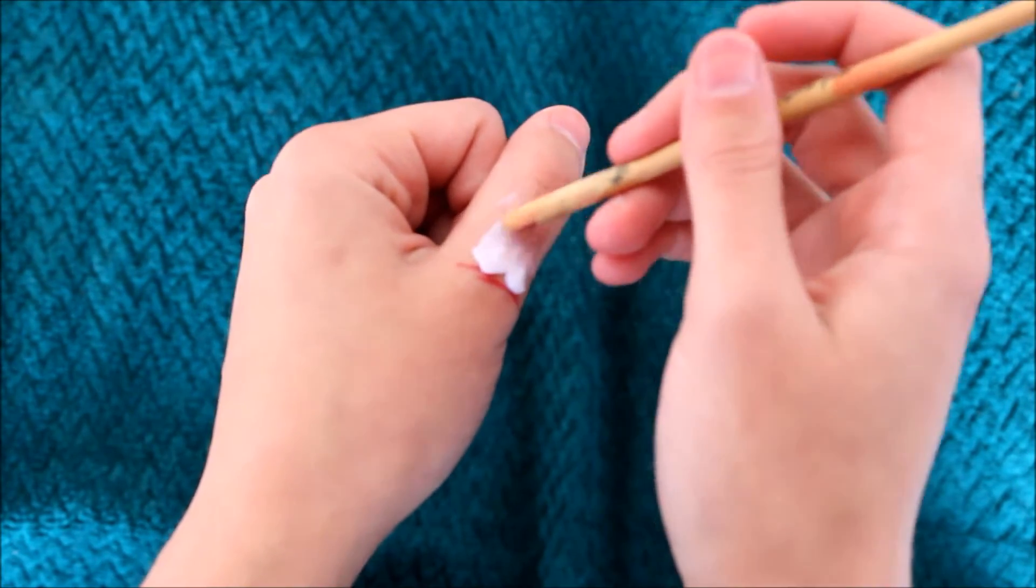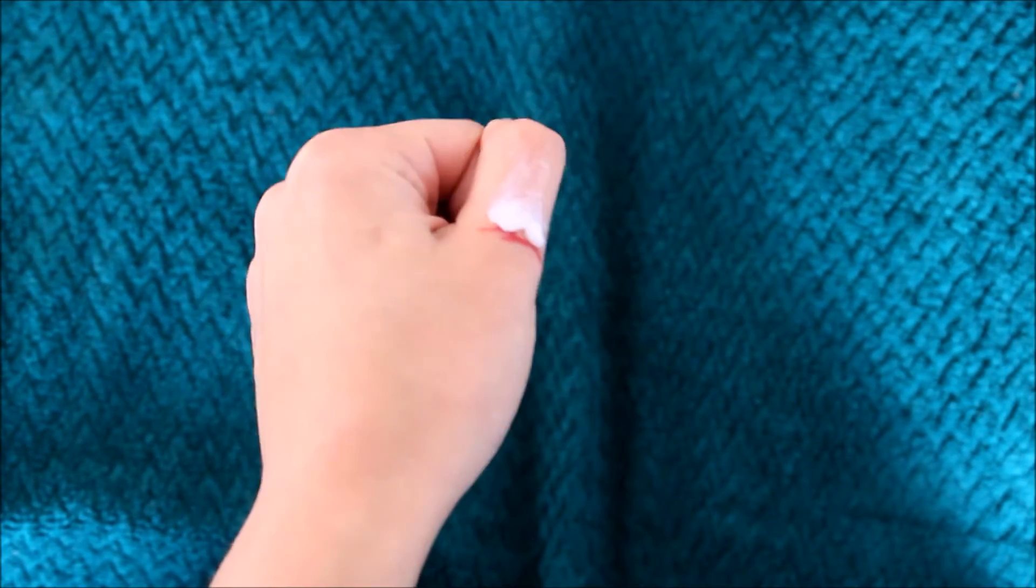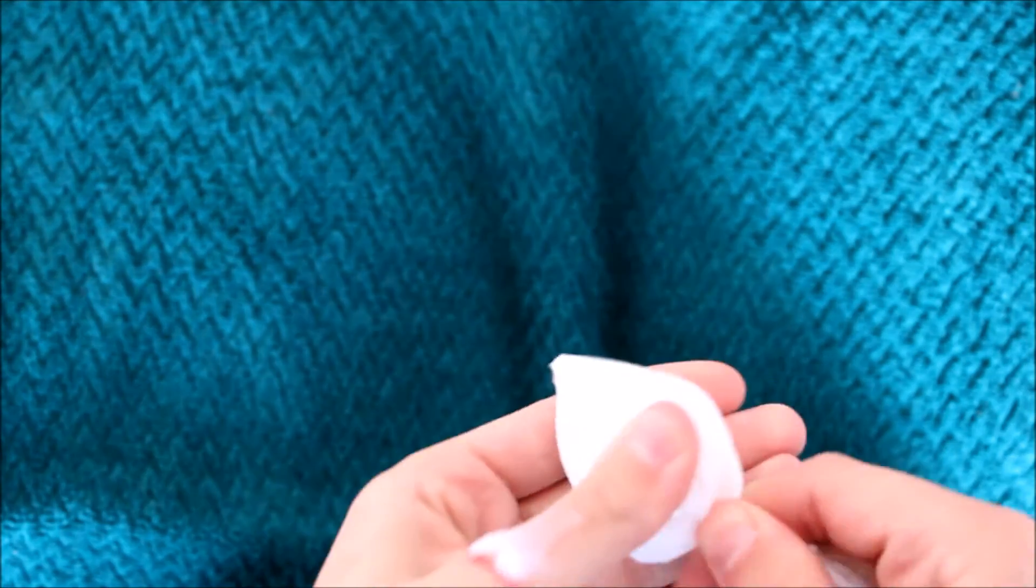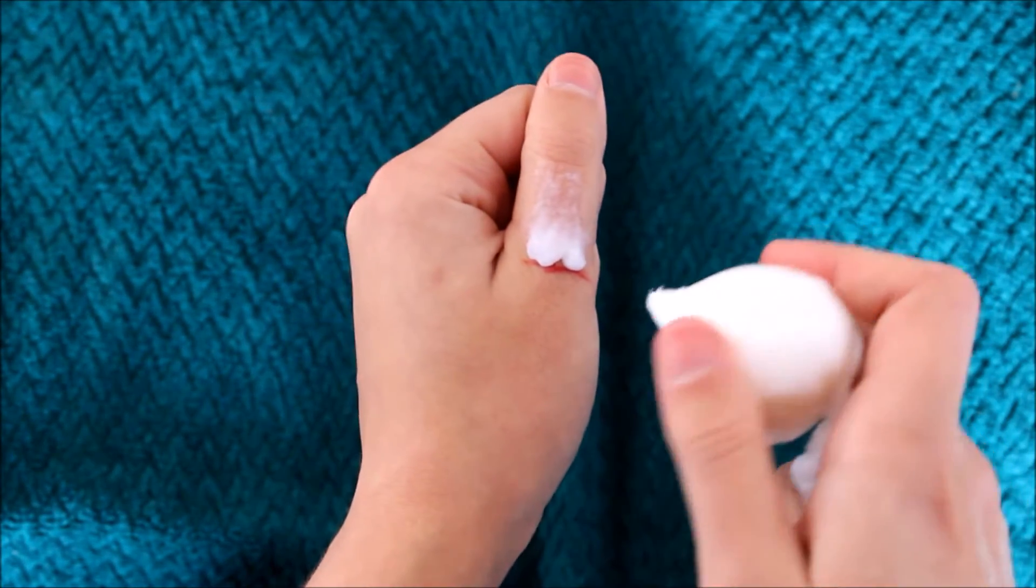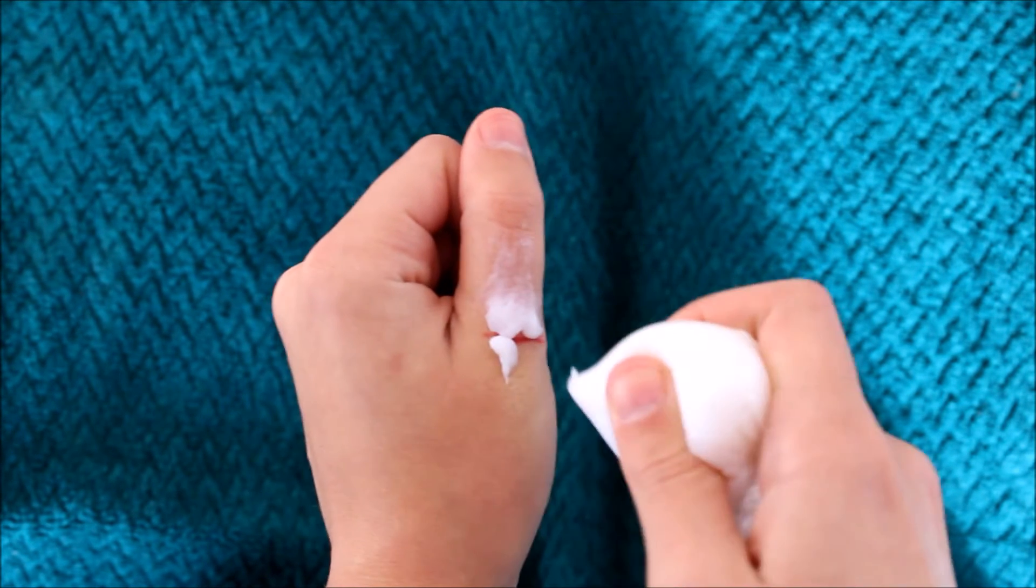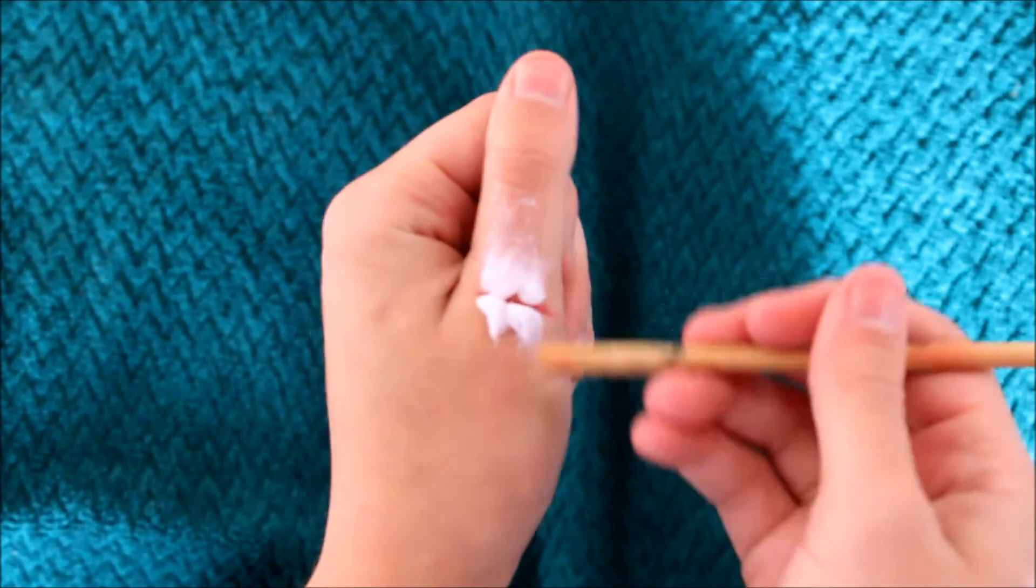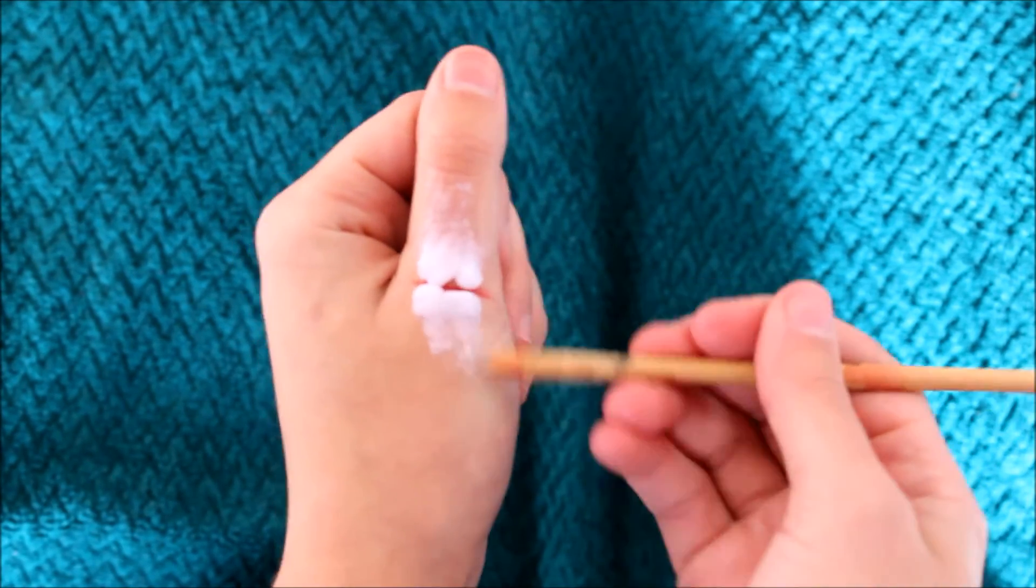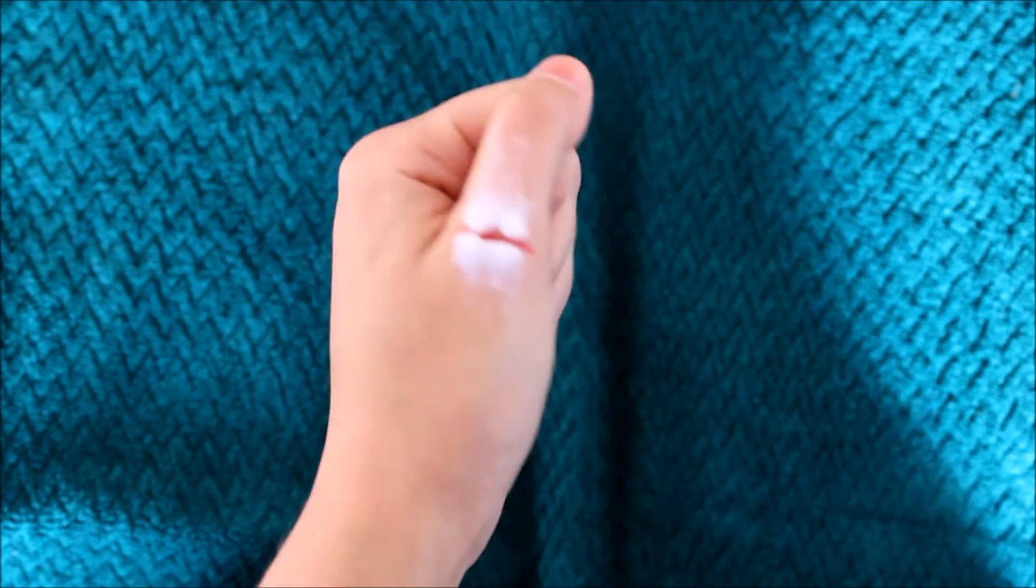So you're just going to use your sculpting tool, and you're going to smooth it down and make sure it's the right shape that you want. And you're going to repeat the process on the bottom. Just mirror the top piece. This is roughly what finger joints look like. It's not actually what they look like, but it looks good on the injury.